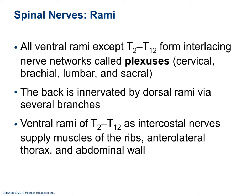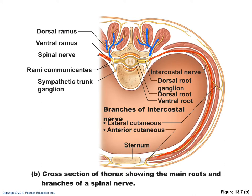All ventral rami except T2 through T12 form plexuses — cervical, brachial, lumbar, and sacral. The back is innervated by dorsal rami. Ventral rami T2 through T12 become intercostal nerves, supplying muscles between the ribs, the anterolateral thorax, and the abdominal wall.